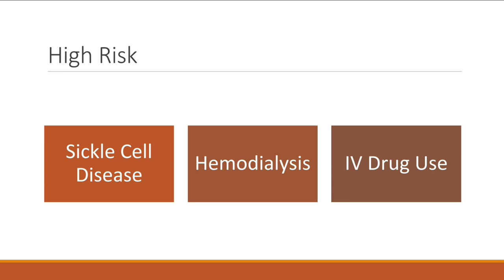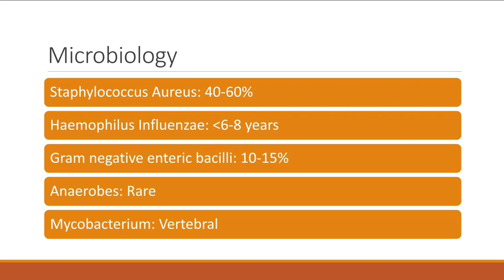Patients at high risk for hematogenous osteomyelitis include sickle cell patients, hemodialysis patients, and IV drug users. When you have a bacteremic patient, especially with Staphylococcus aureus, you should always check the spine and make sure there is no tenderness in the vertebral spine.